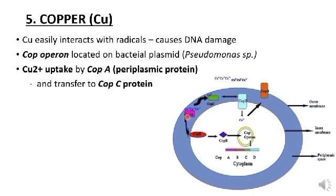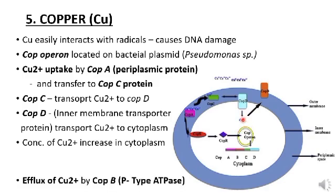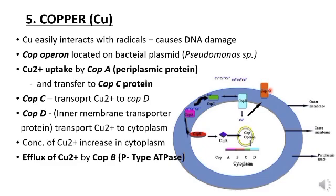Copper binds to CopA, which is a periplasmic protein. CopA transfers copper to CopC protein. CopC protein transports copper to CopD protein. CopD is an inner membrane transport protein which transports copper to the cytoplasm. When copper concentration in the cytoplasm increases, copper is pumped out from the bacterial cell by CopB, which is a p-type ATPase.